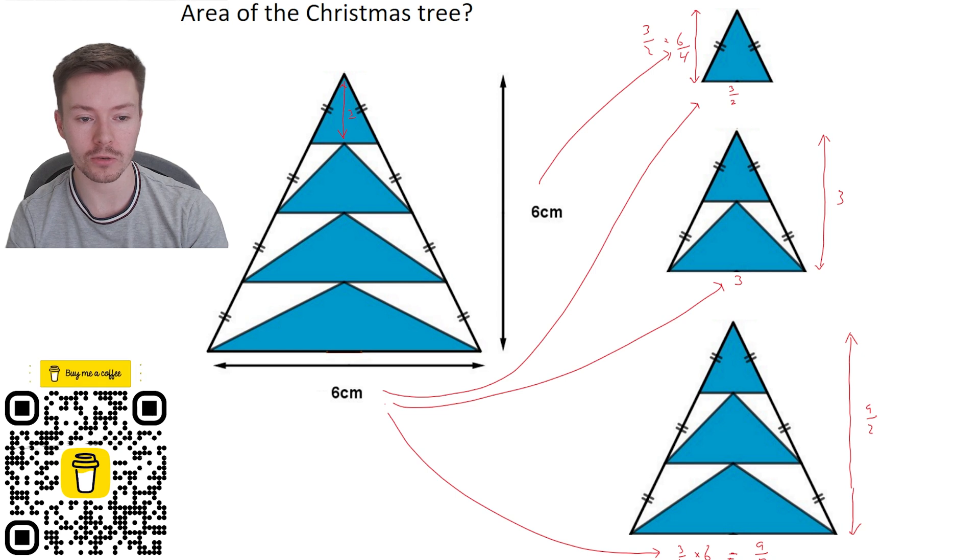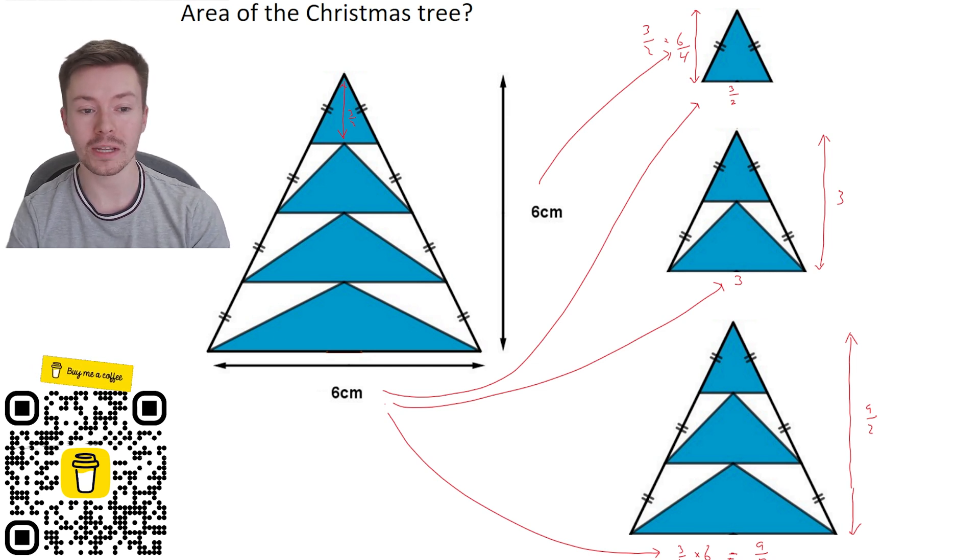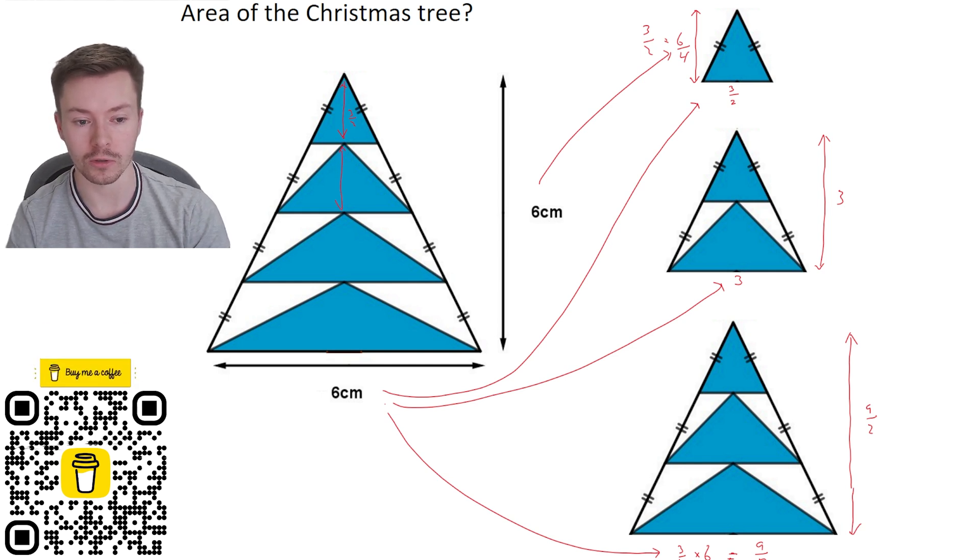So we'll leave it as three over two rather than 1.5. Now the height of these top two in total is three. So the height of those top two is three. Three take away three over two leaves me with three over two. And so I get this is three over two.